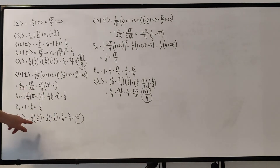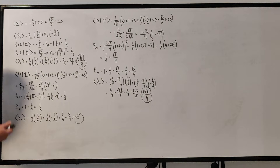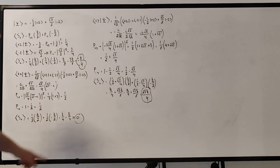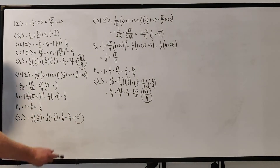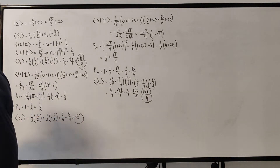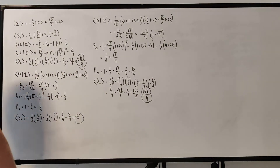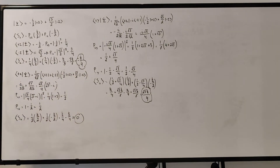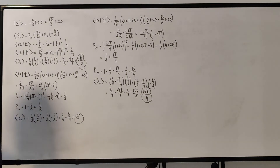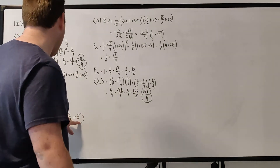Plugging those probabilities into the expectation value equation, we get 1/2 times ℏ/2 plus 1/2 times -ℏ/2, which is ℏ/4 minus ℏ/4 = 0. So in problem 1.10 the expectation value for y was 0, and in this problem the expectation value for x is 0. My prediction is that the expectation value for y is going to be what the expectation value for x was in 1.10, since they've swapped here.